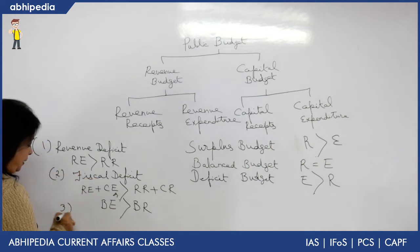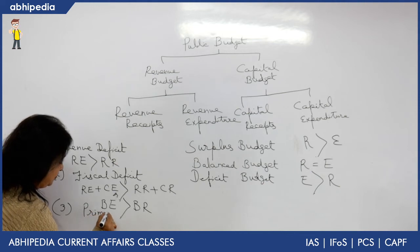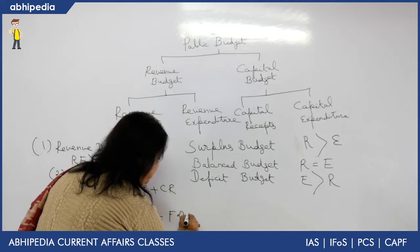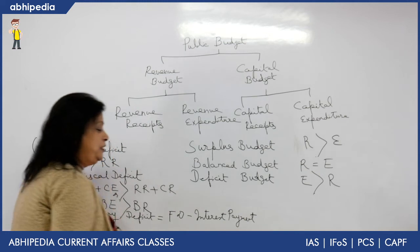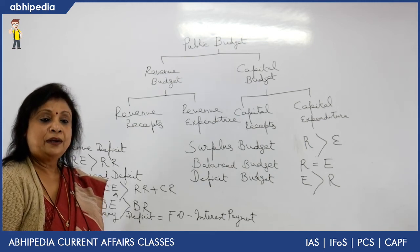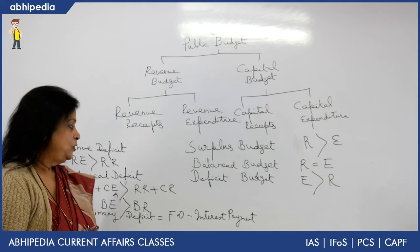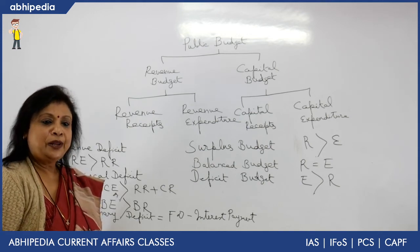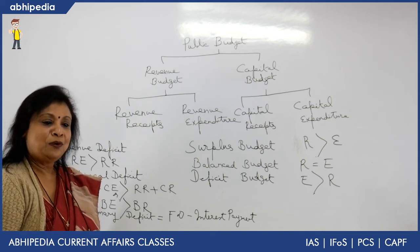The third type of deficit is primary deficit. Primary deficit is equal to fiscal deficit minus interest payment. It is also a very important concept because it tells us how much dependence we have on other countries for loans. Again, it will hamper our credit rating internationally, and we will have to secure loans at higher rates of interest, which is going to hamper the economic growth of our country. These are the key concepts — revenue deficit, fiscal deficit, and primary deficit — which are very important from the UPSC point of view.